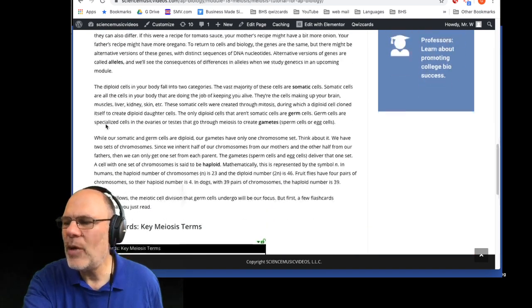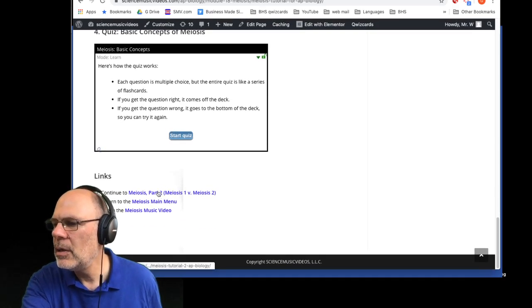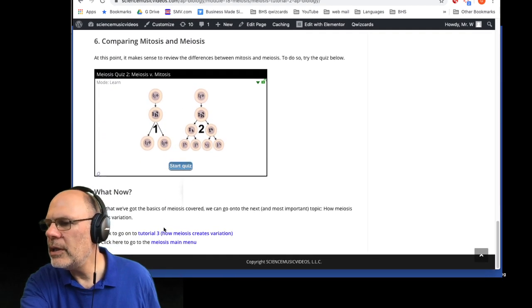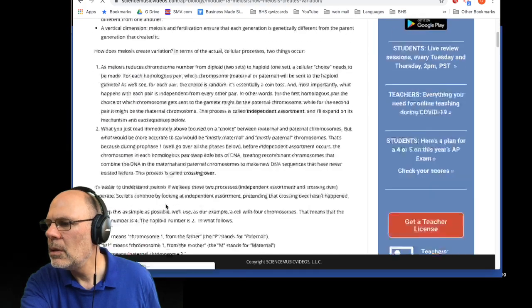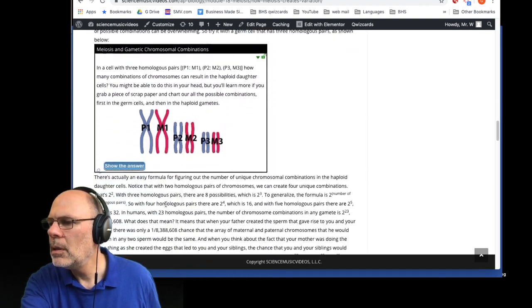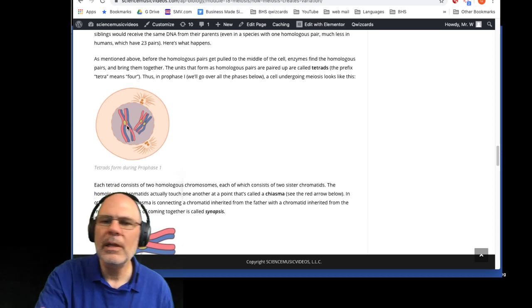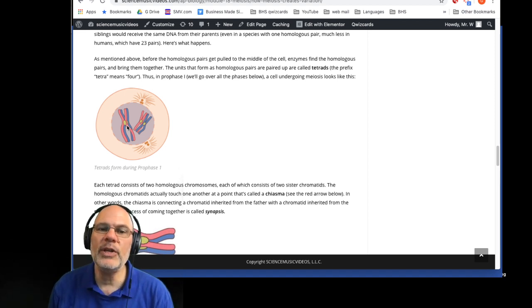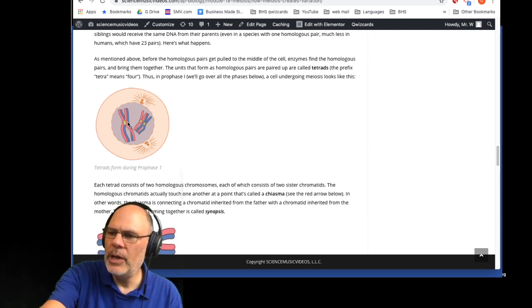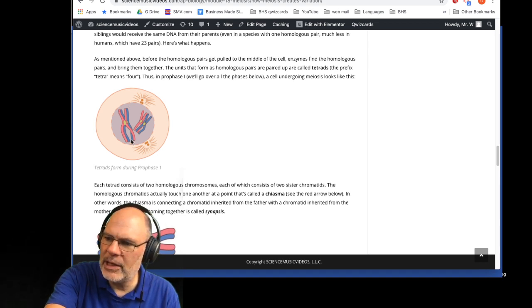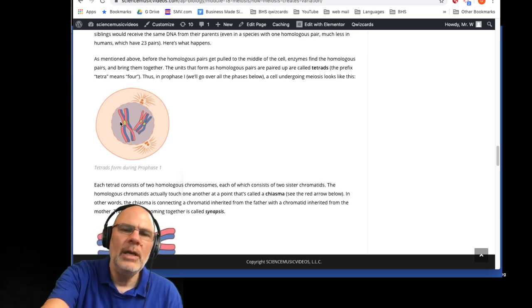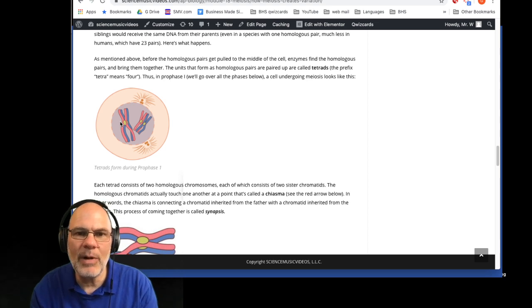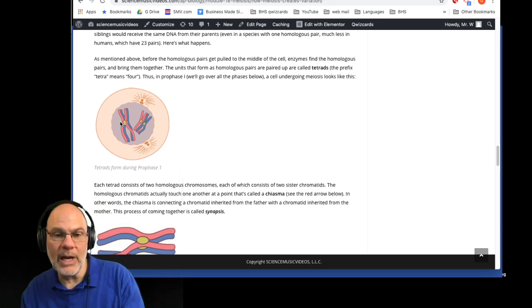Now, during meiosis, tetrads form. This is a tetrad. So when homologous pairs pair up, they form a unit that consists of four chromatids. Tetra, four. So this thing with four chromatids, two from each homologous pair, that's a tetrad. And the tetrad formation is connected to the process of synapsis. Synapsis is the homologous pairs coming together, forming tetrads. Then they exchange bits of DNA and the process is called recombination. And that explains recombination that occurs during genetics.